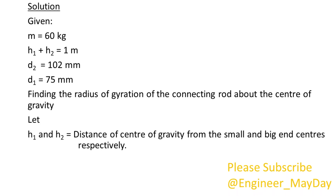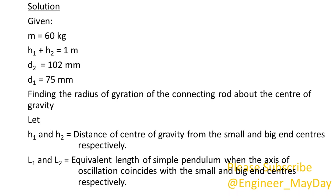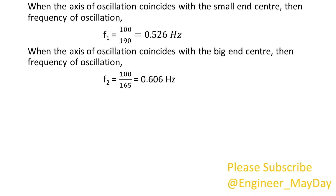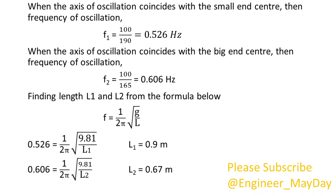Let H1 and H2 equal the distance of center of gravity from the small and big end centers respectively. L1 and L2 equal the equivalent length of simple pendulum when the axis of oscillation coincides with the small and big end centers respectively. When the axis of oscillation coincides with the small end center, frequency F1 equals 0.526 hertz. When it coincides with the big end center, frequency F2 equals 0.606 hertz. Finding lengths L1 and L2: L1 equals 0.9 meters and L2 equals 0.67 meters.